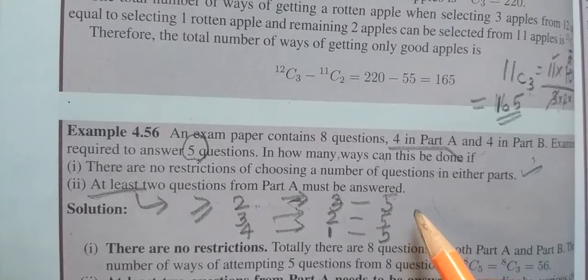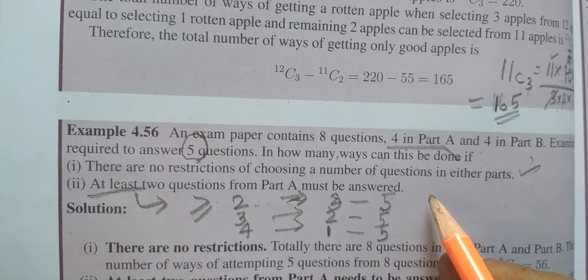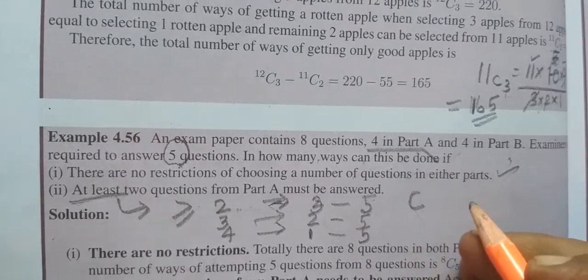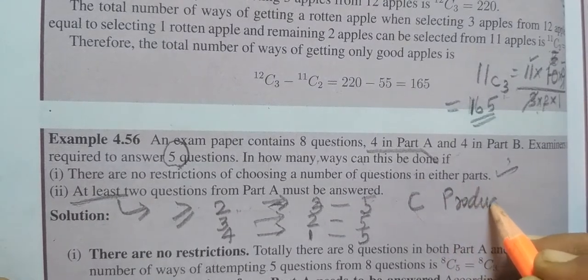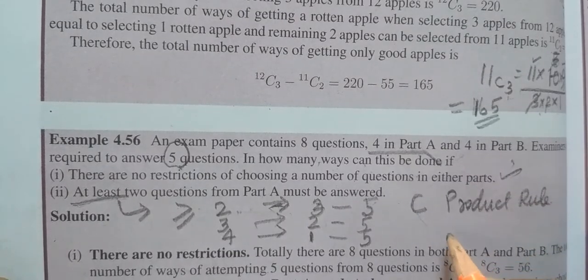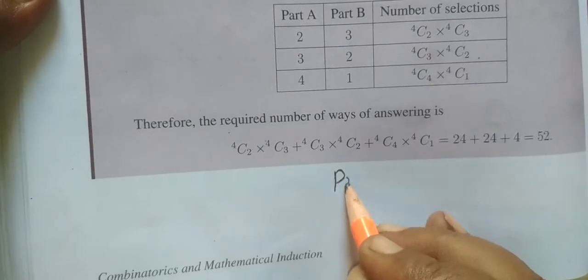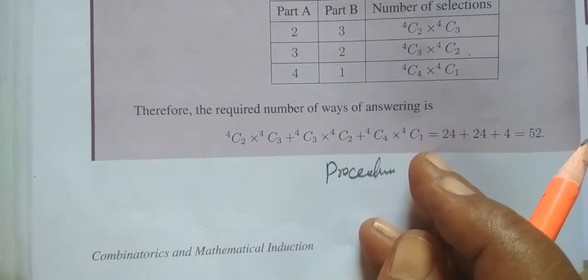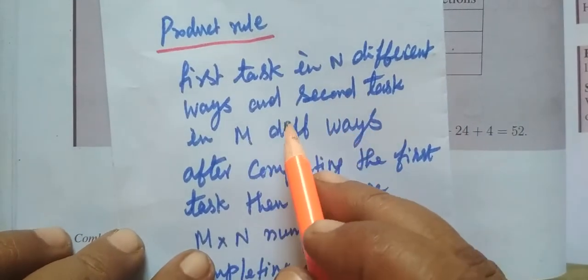We are selecting, right? So we use the selection formula, we use the combination formula. In this question, we are using the product rule. We will see how to use the product rule. We will use one procedure and complete it.